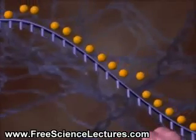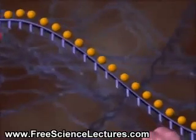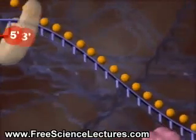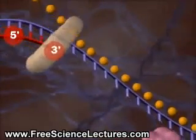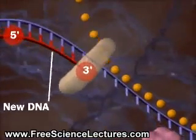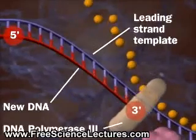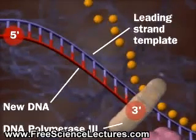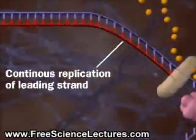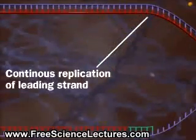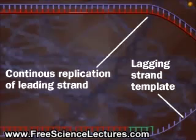One DNA strand encodes the leading strand, which forms from its 5' to its 3' end using DNA polymerase 3. No problem here, but the lagging strand presents problems.